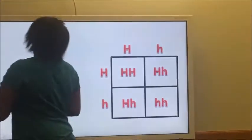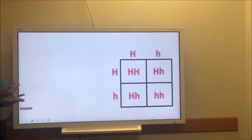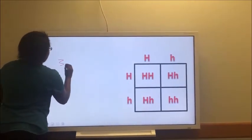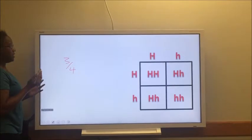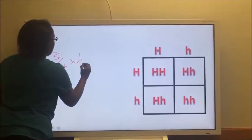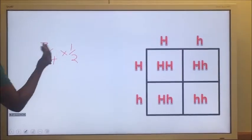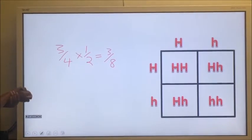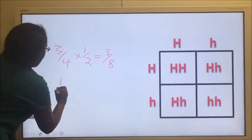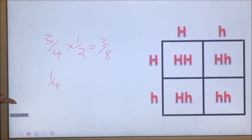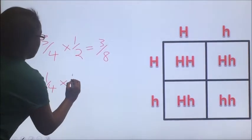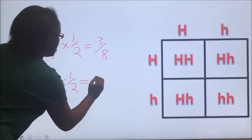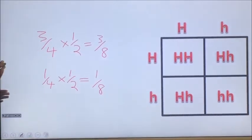As an example of the probability, if we wanted to do a spotted male, it would have a 3 in 4 chance of having a spotted male by a 1 in 2 chance of having a male in general, which would give us a 3 in 8 chance of having a spotted male, versus a 1 in 4 chance of having a spotted female by the 1 in 2 chance of having a female in general, which would give us a 1 in 8 chance of having a spotted female.